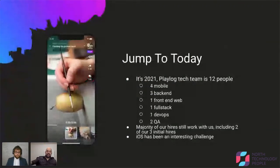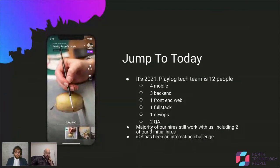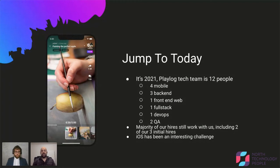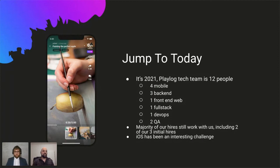Jumping to today, we now have a tech team of about 12 people: four mobile developers, three people on our backend team, one person on front-end web, one full-stack developer for both front-end and back-end as needed, a DevOps person, and two QA developers. Most of the people we've hired have stuck with us over the past three and a half years, including two or three initial hires. Our biggest challenge has been on the iOS side, which I attribute partly to a learning curve on my end in communicating to people in certain technical ecosystems I wasn't a part of, as well as having to choose the best available rather than the best candidate in situations of limited time.